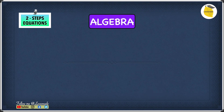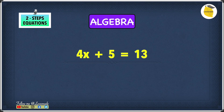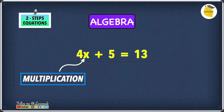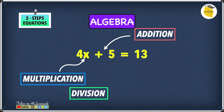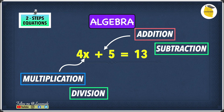Let's have a look at two-step equations. The example we have is 4x plus 5 equals 13. In this example we have multiplication and we also have addition. To undo multiplication we know we have to do division, and to undo addition we know we have to do subtraction. So we need to undo both multiplication and addition.